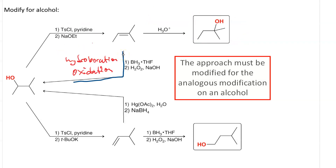Doing hydroboration-oxidation of our 2-methyl-2-butene: the first step is borane and THF, the second step is hydrogen peroxide and sodium hydroxide. That does anti-Markovnikov hydration, which takes us back to our original substance.